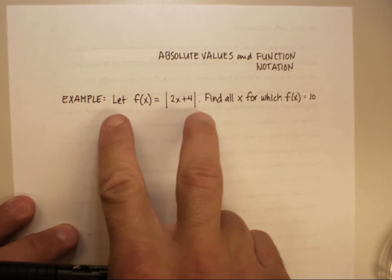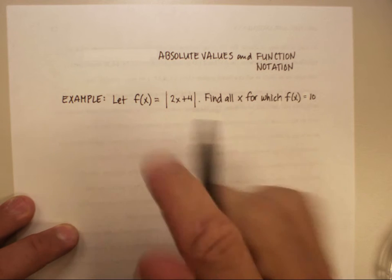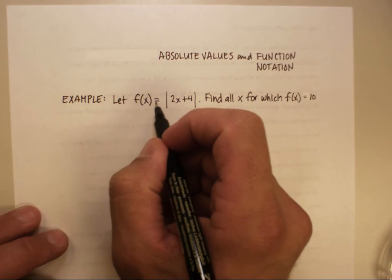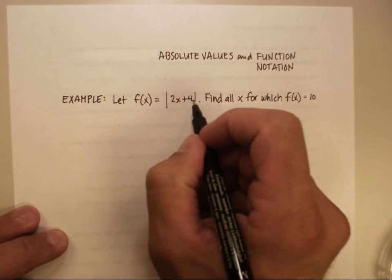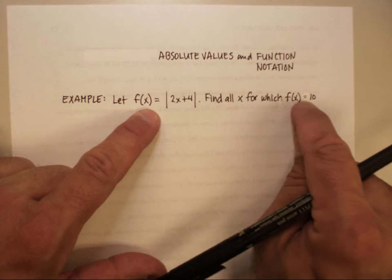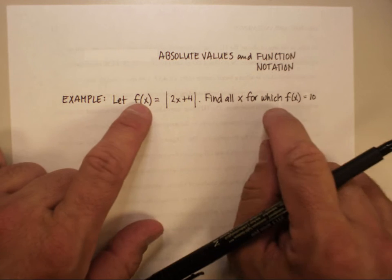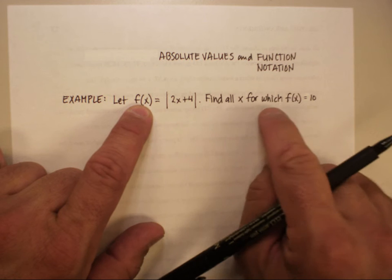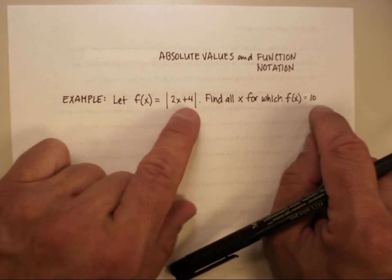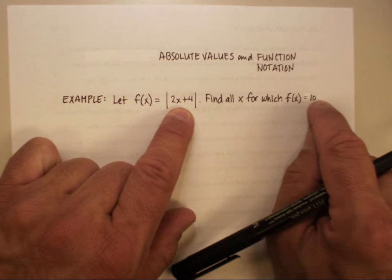Basically what they do with function notation is they break it up into two parts. When they say let the f of x or the function of x equals the absolute value of 2x plus 4, and they want you to find all the inputs for which the f of x is equal to 10. So look at it this way. If f of x equals this, and f of x equals this, that means that this second part and this second part are also equal to one another.